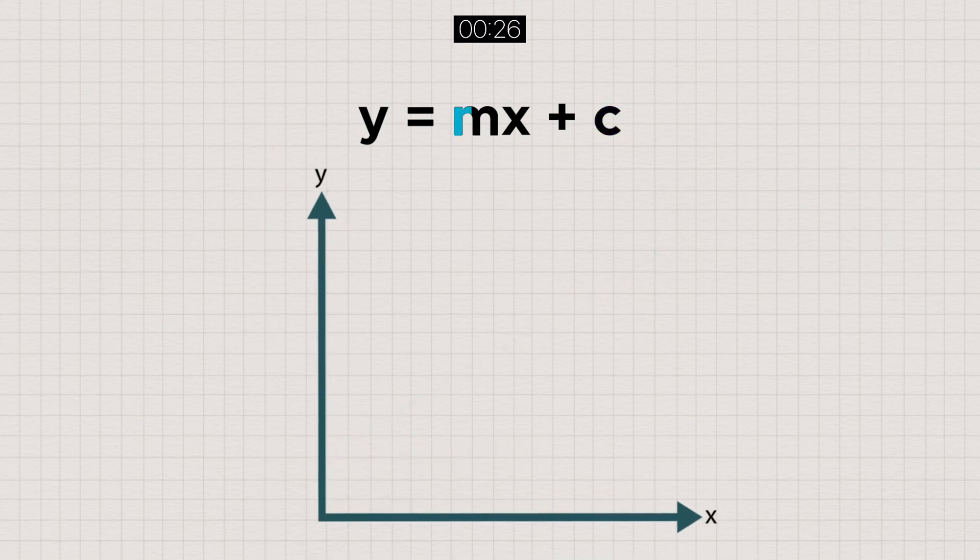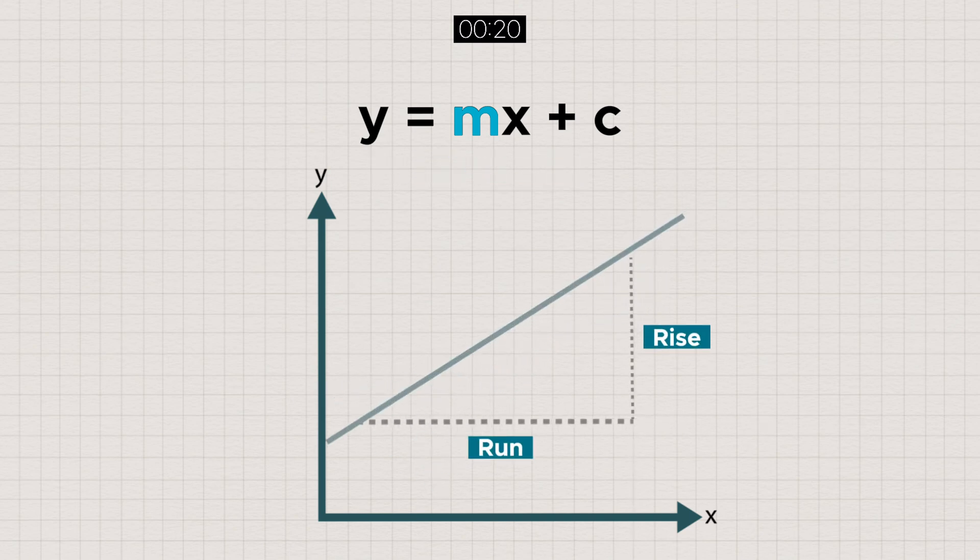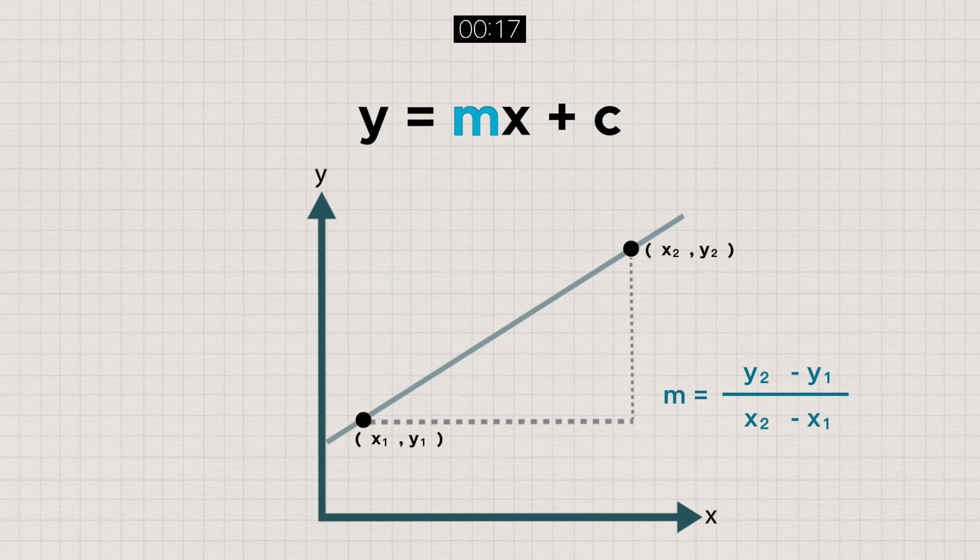Lastly, we have m, which represents the gradient or slope of the line. It is measured by having the rise over the run. The formula is m equals y2 minus y1 over x2 minus x1.